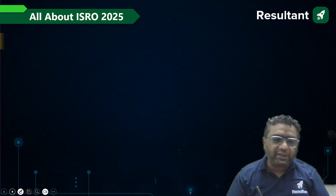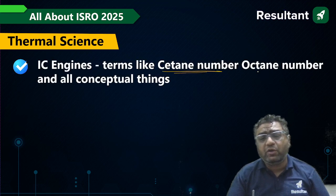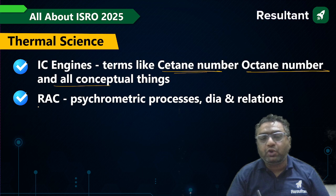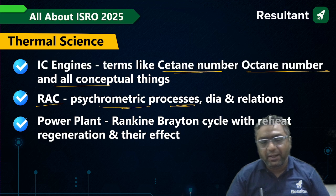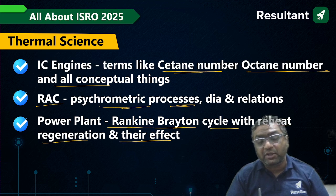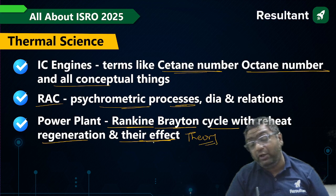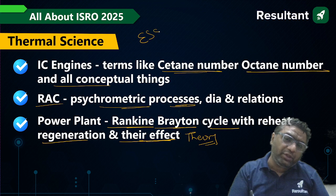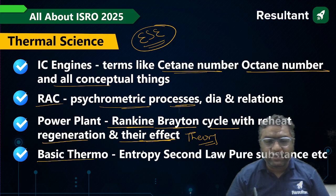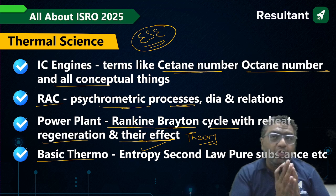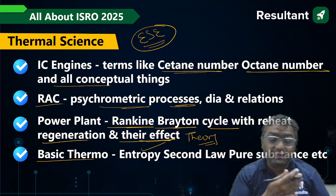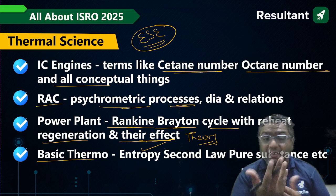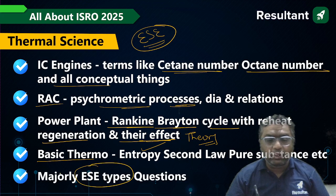In Thermal Sciences, questions are asked on CT number, octane number, and those conceptual terms. Psychrometric processes on diagrams are asked: dehumidification, humidification, cooling, and heating. In power plants, cover the Rankine and Brayton cycles with reheat and regeneration and their effects — generally theory questions come but be ready for numericals too, as their pattern is similar to Engineering Services. Also expect basic thermodynamics: entropy, second law, and pure substances — entropy calculations for ideal gases, Carnot cycle, and hs graphs and Mollier diagrams.